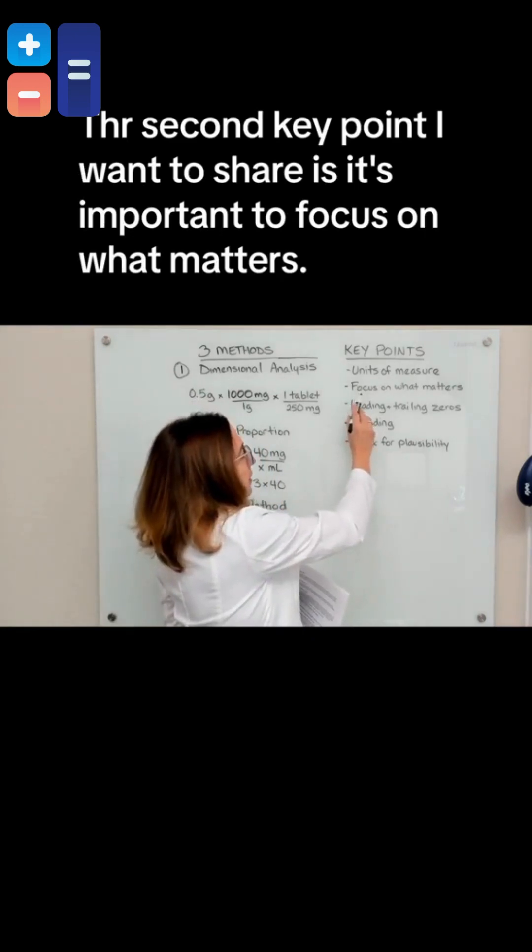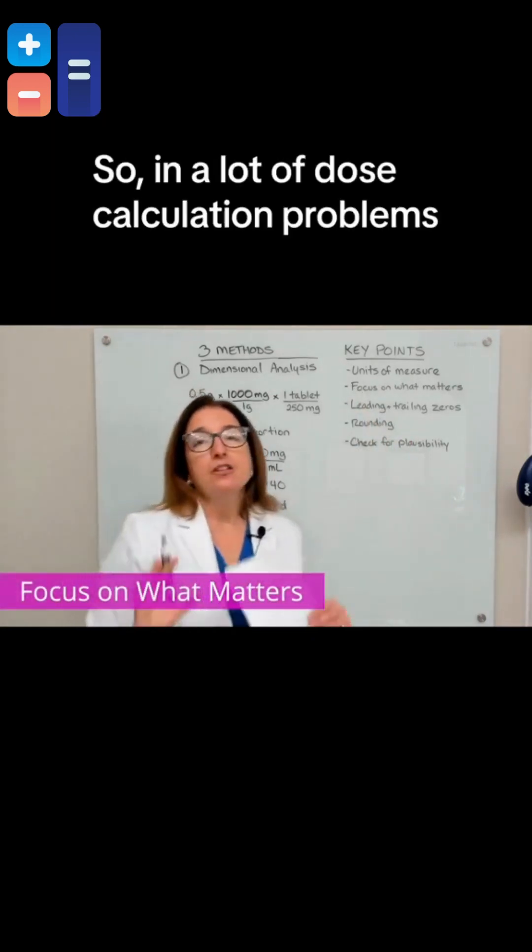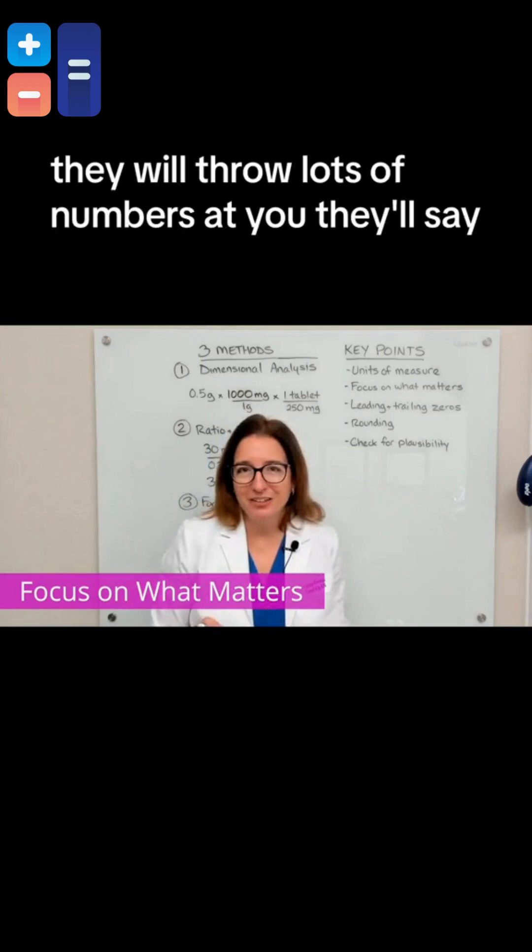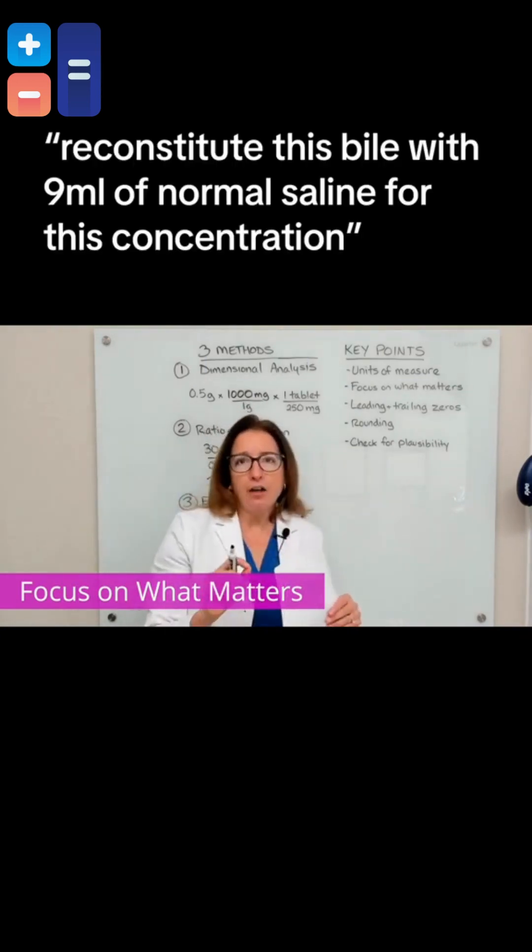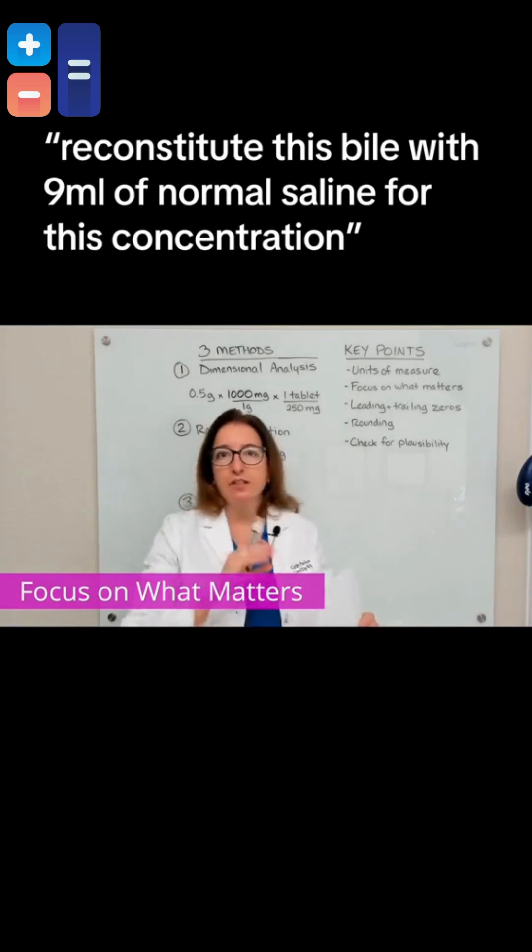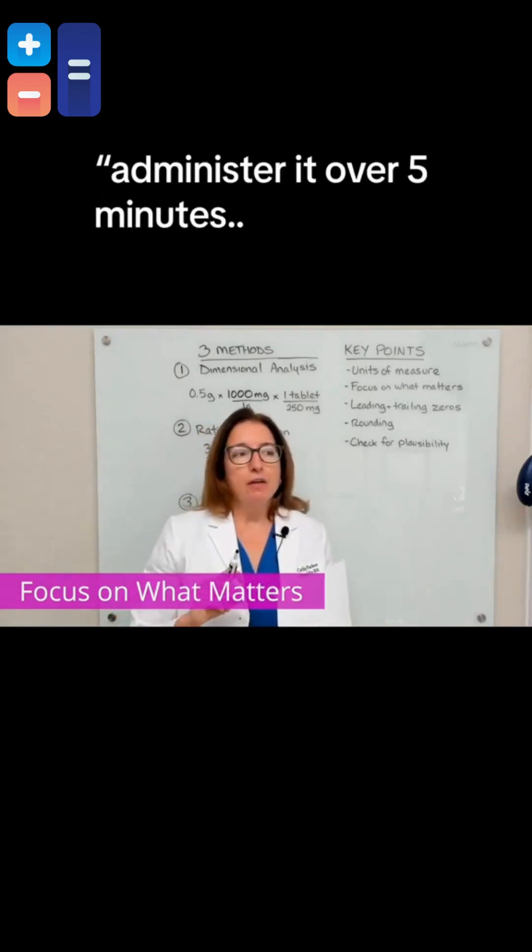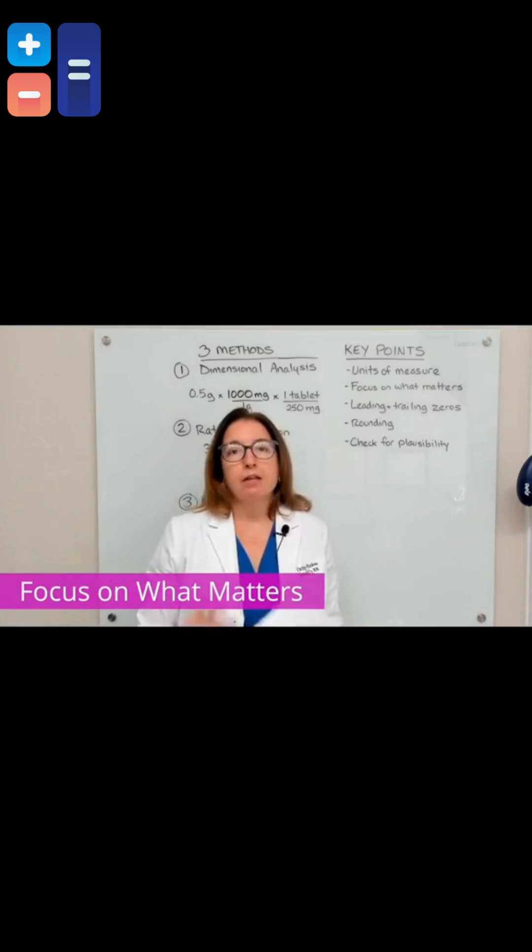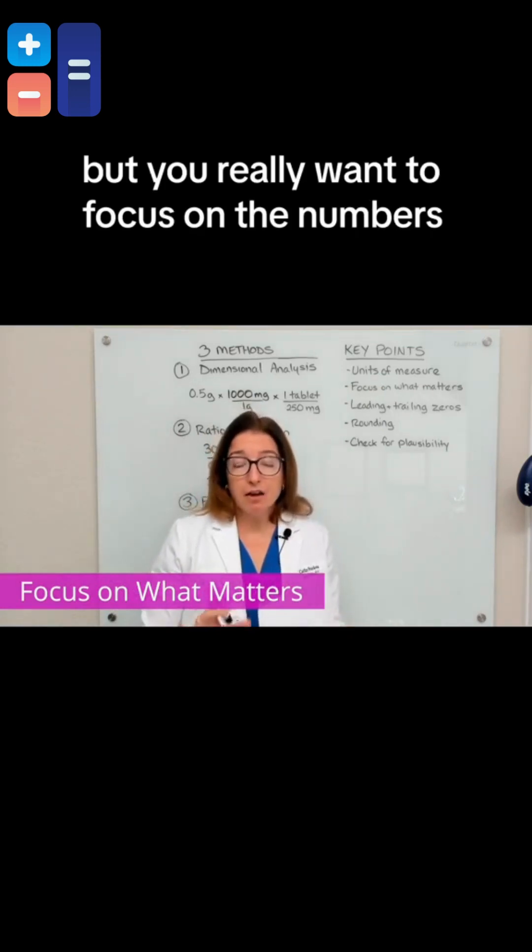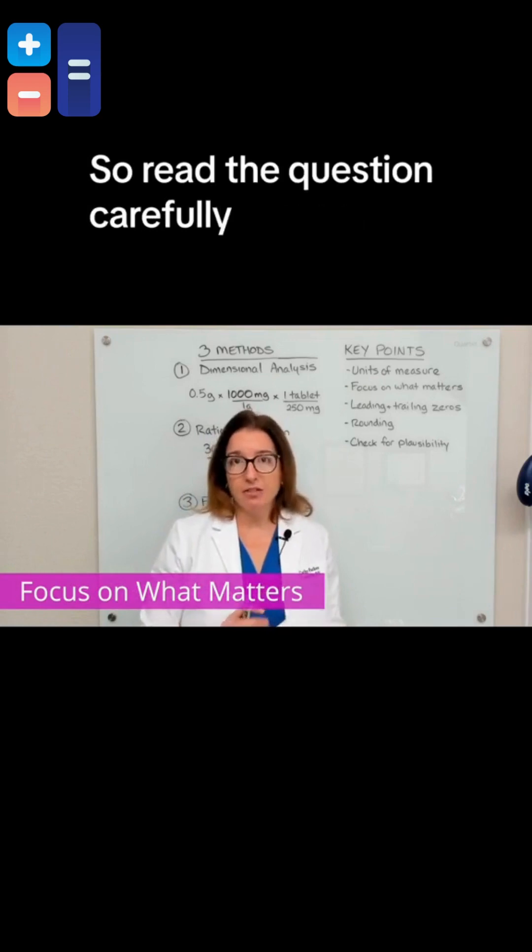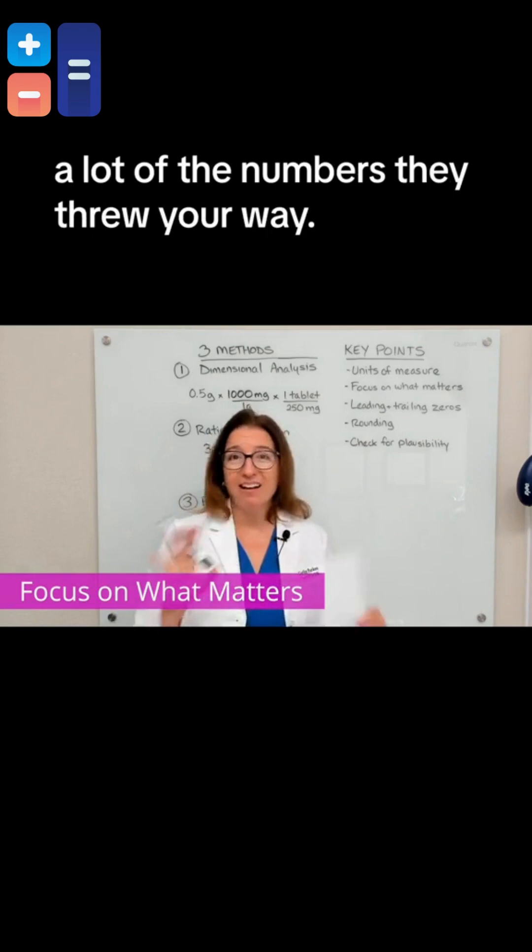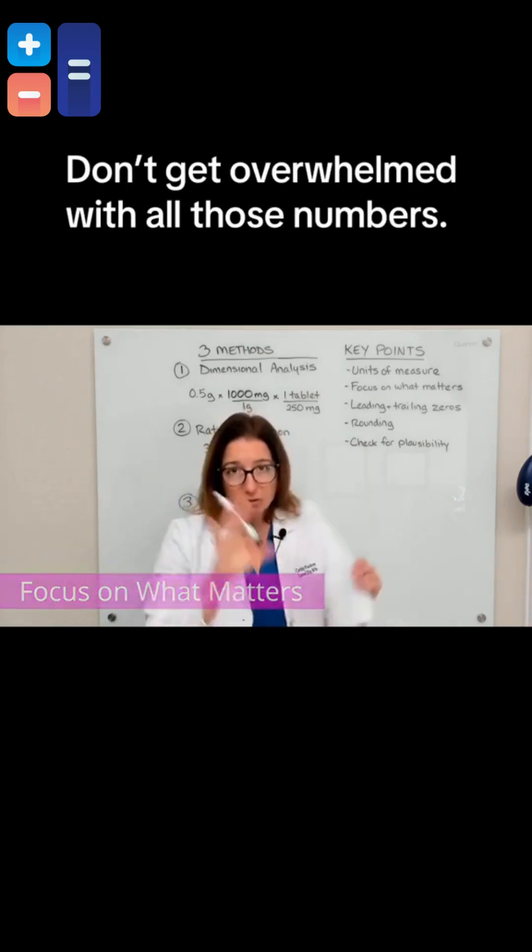The second key point I want to share is it's important to focus on what matters. In a lot of dose calculation problems, they will throw lots of numbers at you. They'll say, reconstitute this vial with nine milliliters of normal saline for this concentration, and then administer it over five minutes and do this and this. A lot of numbers, and it can be overwhelming. But you really want to focus on the numbers you need to solve the problem at hand. Read the question carefully and only consider the numbers you need to consider to answer that question. Chances are you're going to be able to ignore a lot of the numbers they threw your way.